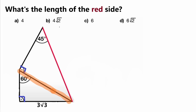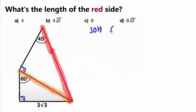The first thing we're going to do is use trigonometry to find the side length highlighted in orange. For those who may have trouble remembering which trig function to use, I always use SOH-CAH-TOA.